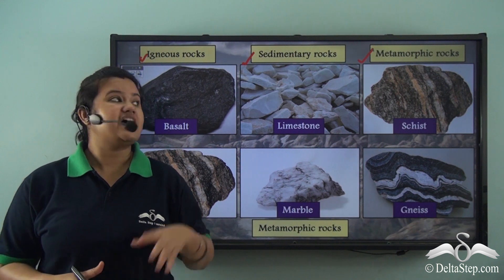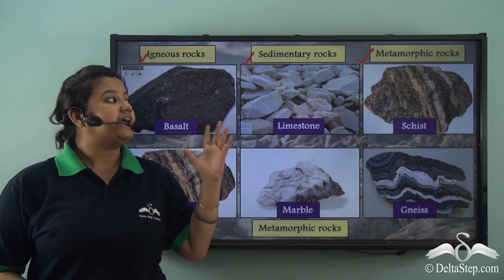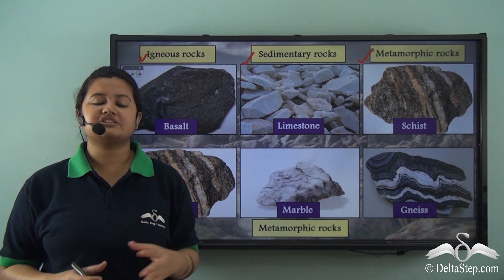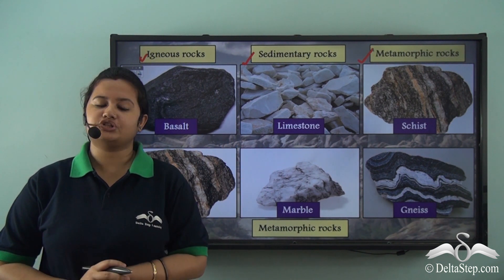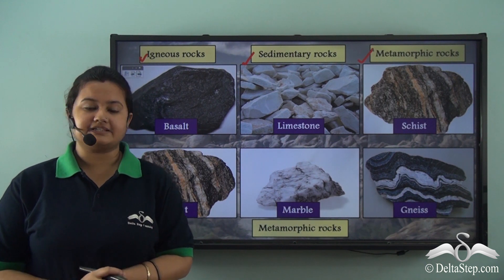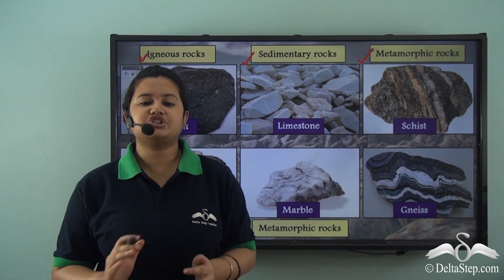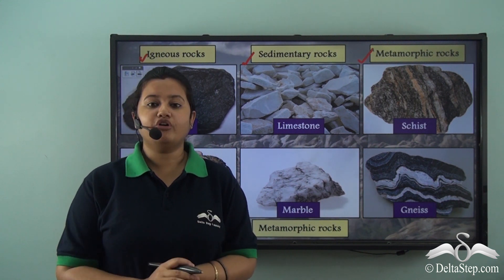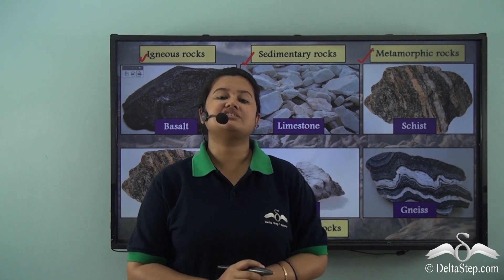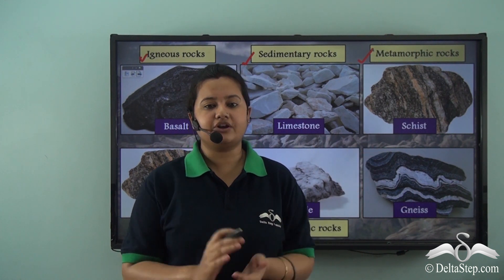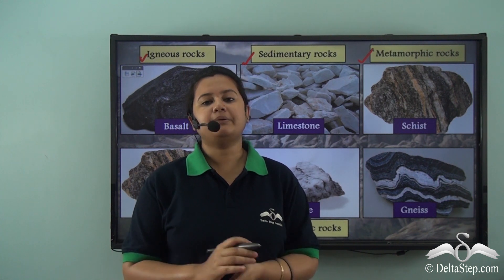We have already learnt how these three different types of rocks are formed. Igneous rocks are formed due to solidification and condensation of molten materials. Sedimentary rocks are formed due to deposition and consolidation of sediments. And finally, metamorphic rocks are formed when the existing rocks get transformed due to heat and pressure.